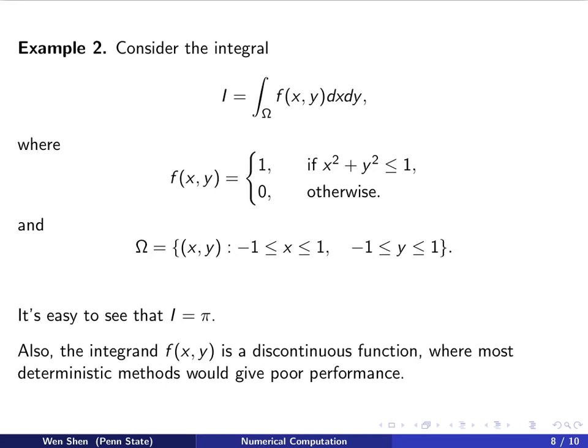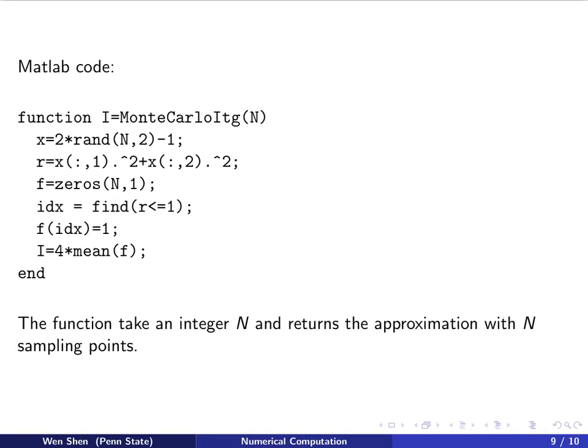This integration gives the area of the unit circle, so the exact value of I is π. We can view this example as a way to compute an approximate value for π. Also note that the integrand f is a discontinuous function — it has a jump along the boundary of the unit circle at radius 1. For such a discontinuous function, most deterministic methods would give very poor performance and a very low convergence rate. But for the Monte Carlo method, it actually doesn't care.